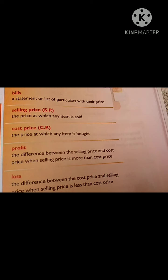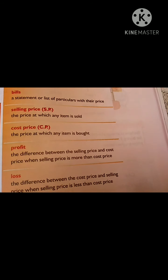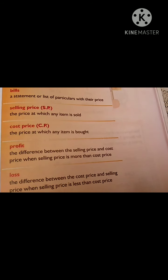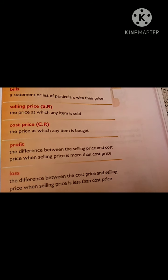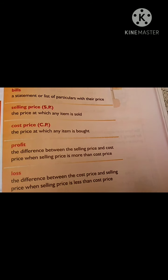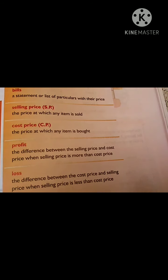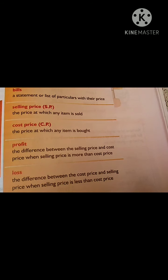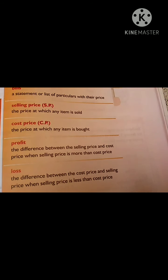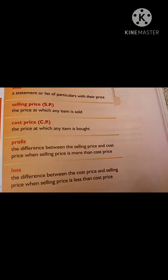And what is selling price? The price at which any item is sold. And cost price — in short we call it CP, and selling price we call it SP. Cost price is the price at which any item is bought or purchased.